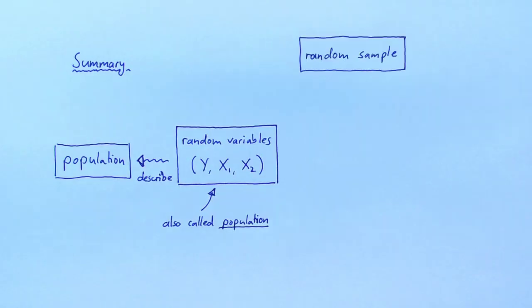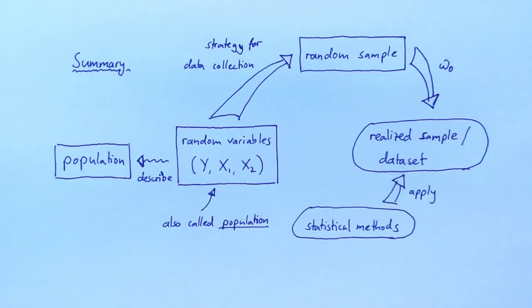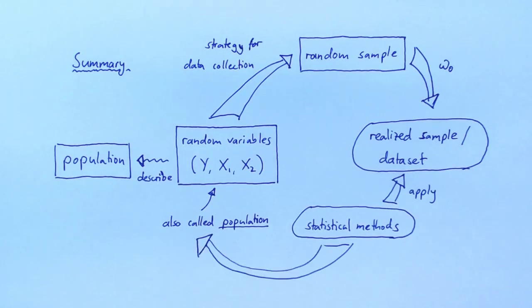A random sample is a mathematical metaphor for how we collect data from our population. It encapsulates the notion that we pick data points randomly. An outcome of the random process of selecting a sample is called a realized sample. A realized sample is a collection of numbers and is also called a data set. We use statistical methods to process data in a data set. The statistical methods give us answers to our questions about the population.